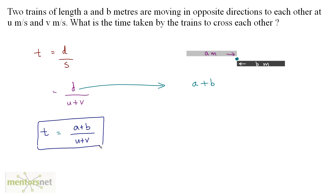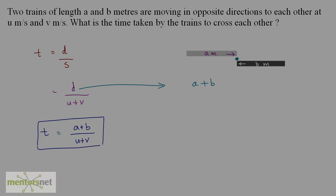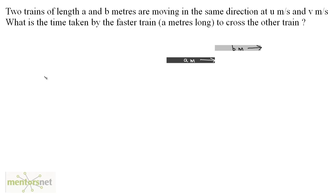This is the formula that applies when you have two trains of lengths a and b meters traveling in opposite directions. Now this next question gives you a similar situation: two trains of length a and b are moving in the same direction at u meters per second and v meters per second. What is the time taken by the faster train — the black one, a meters long — to cross the other train? The relative speed for objects traveling in the same direction is the faster train speed minus the slower train speed, which is u minus v.